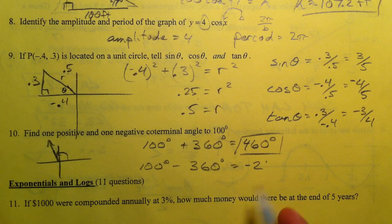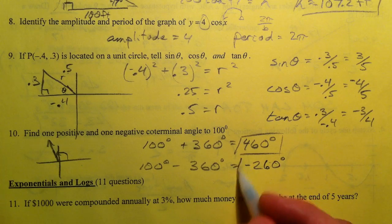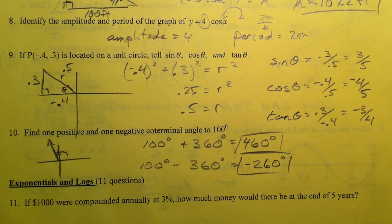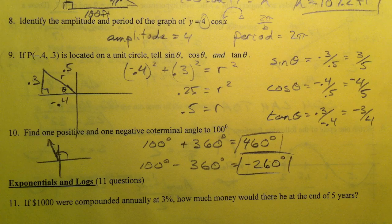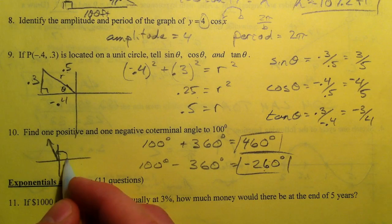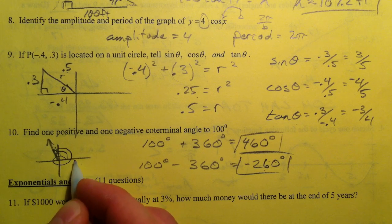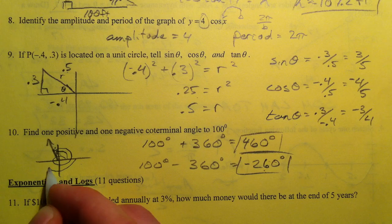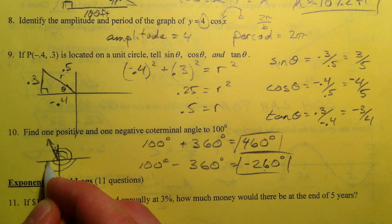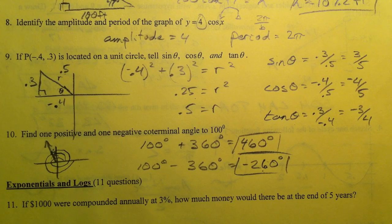I can't think today. Negative 260. Alright so there we have it. And so this is one positive coterminal angle and one negative. The positive one goes around once and then ends up in the same spot. The negative one goes around this way 180 plus another 80. And that's trigonometry.